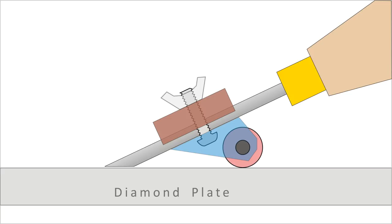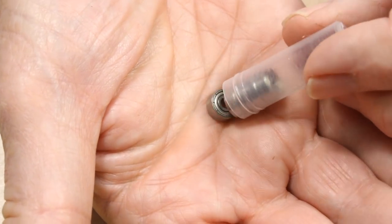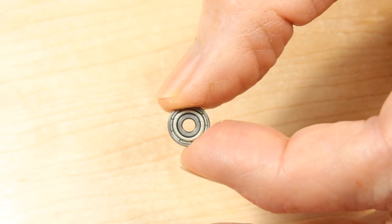Where will you get the 3x10mm bearings? Easy. They're readily available online from several suppliers, and they cost less than skateboard bearings. This jig will use five of these miniature bearings.